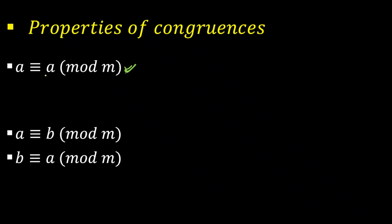The first property is: A will always be congruent to A mod M — that means A is congruent to A mod M. The second property is: if A is congruent to B mod M, you can also write B is congruent to A mod M. This is not like a regular equation. This symbol represents congruence — equivalence classes — meaning B and A are in the same equivalence classes.